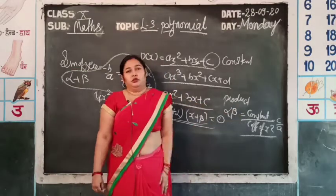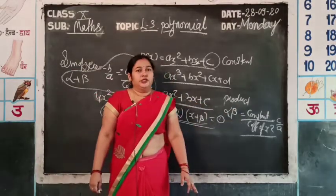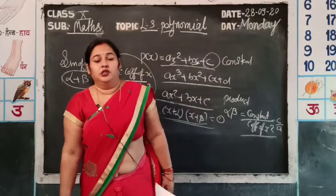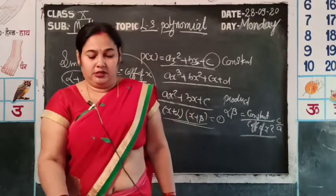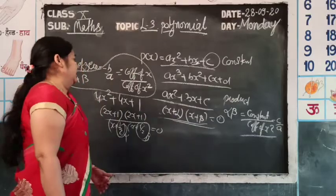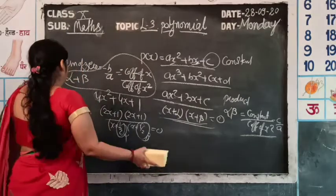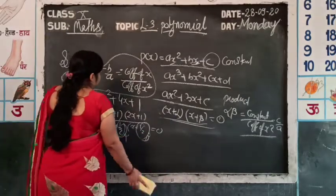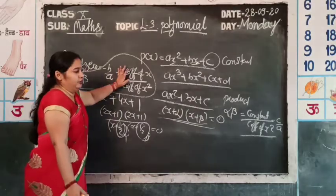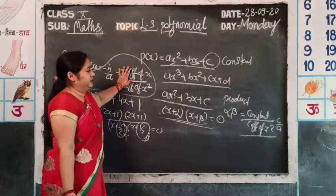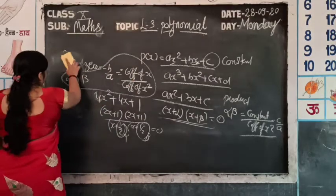This is the relationship between the coefficient and the zeros — a very important question that came in your board exam this year. Now we start Exercise 3.1. First the explanation, then we will do the numericals, and that will give you more clarity.